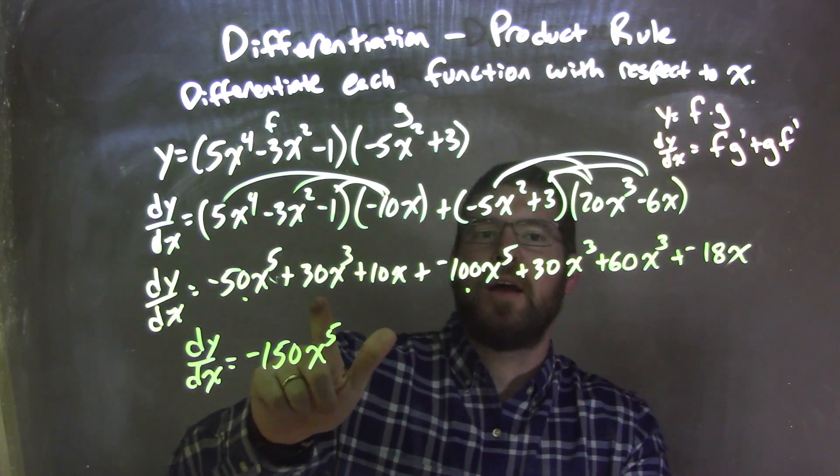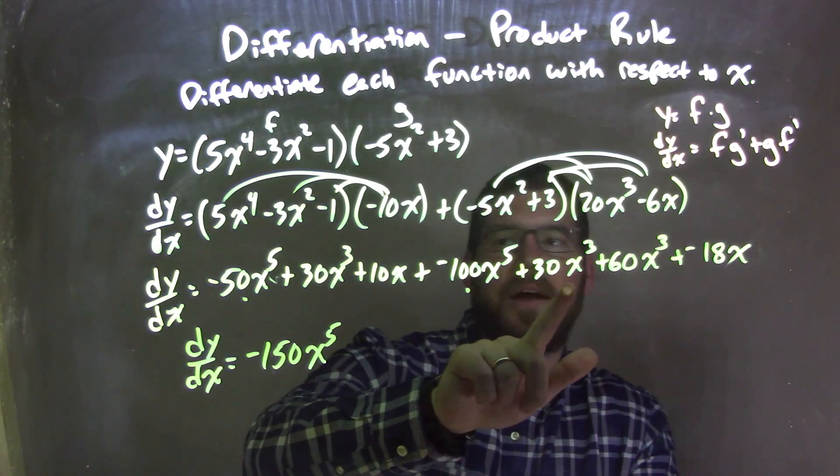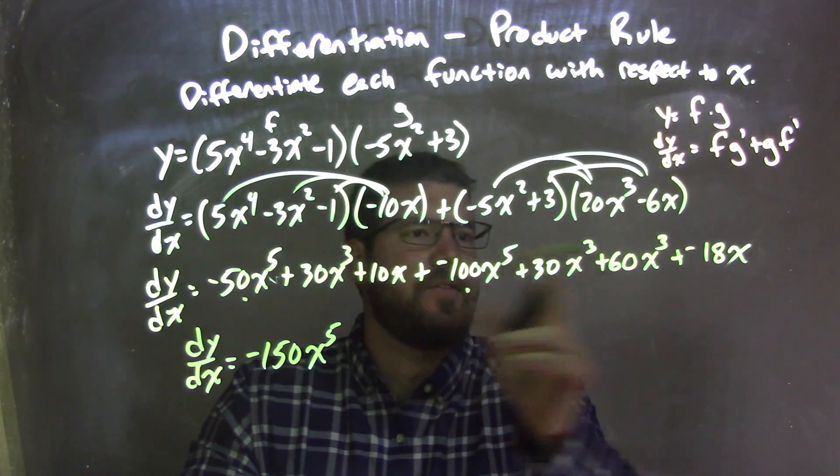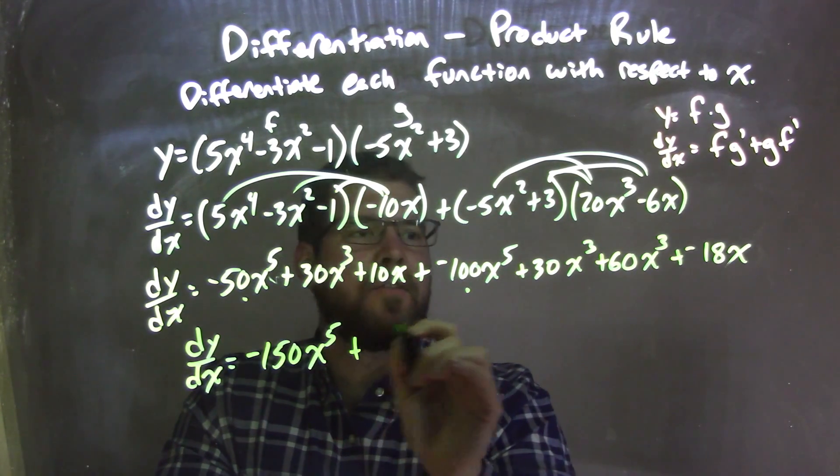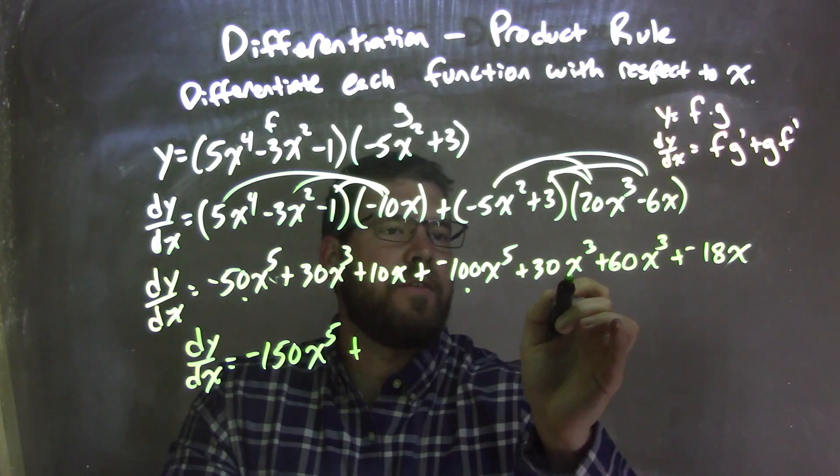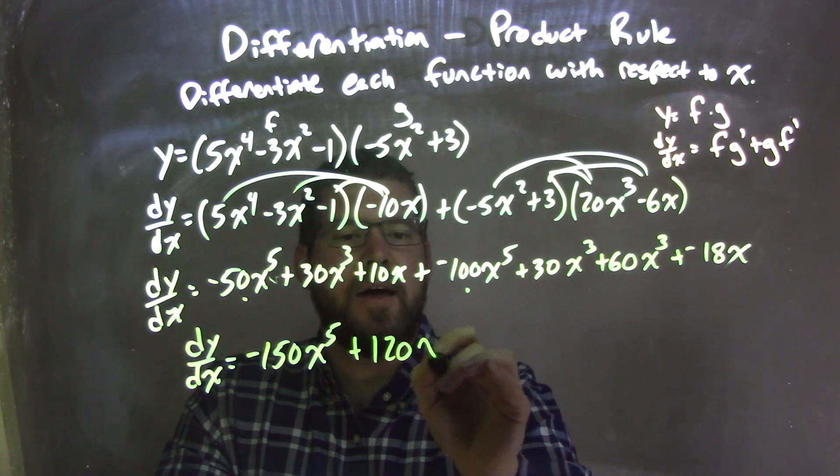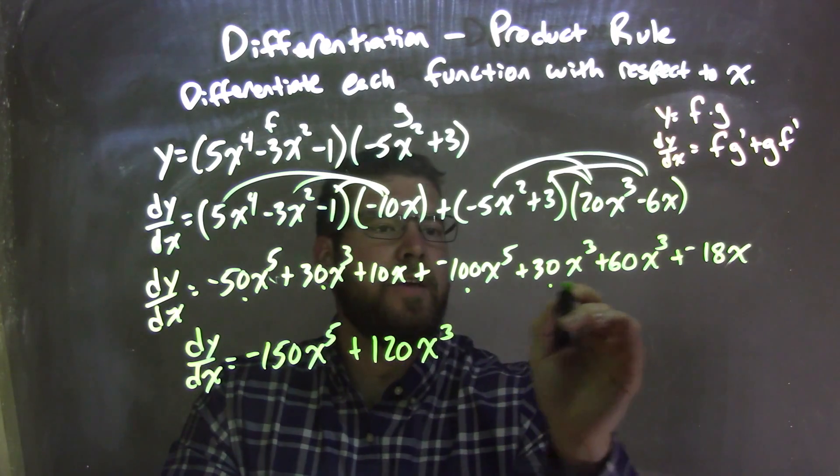The next one, I have 30x to the 3rd and 30x to the 3rd and 60x to the 3rd. x to the 3rd is my next highest degree, there's no x to the 4th. So 30x to the 3rd plus 30x to the 3rd is 60x to the 3rd, plus 60x to the 3rd is 120x to the 3rd.